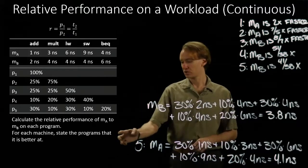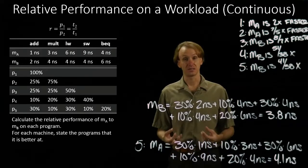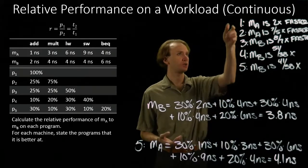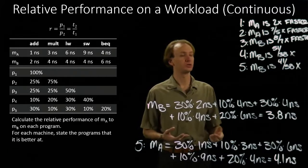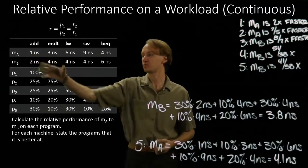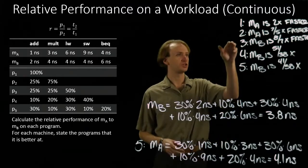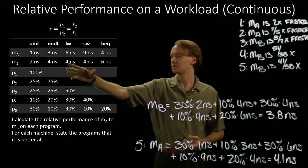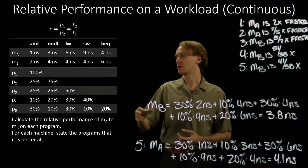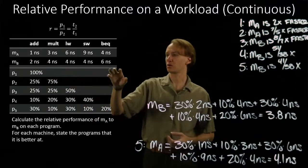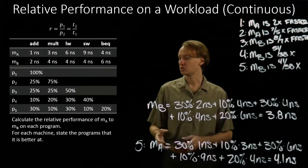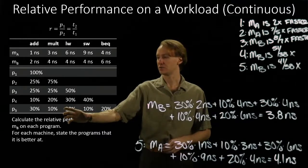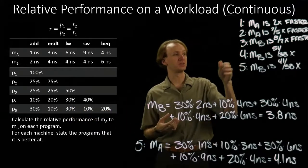For the final question, we look at which programs each machine is better at. Machine A is clearly better at programs 1 and 2, which are heavy on addition and multiplication instructions. Machine B is better at programs 3, 4, and 5 because machine B is really good at memory instructions — so much so that it outweighs the arithmetic instructions in those programs.